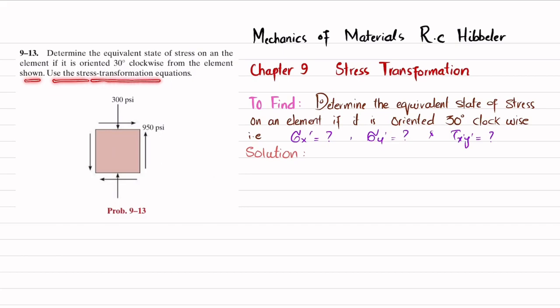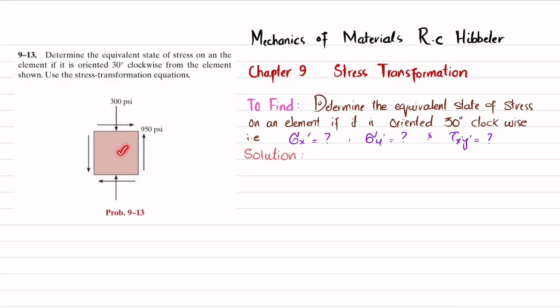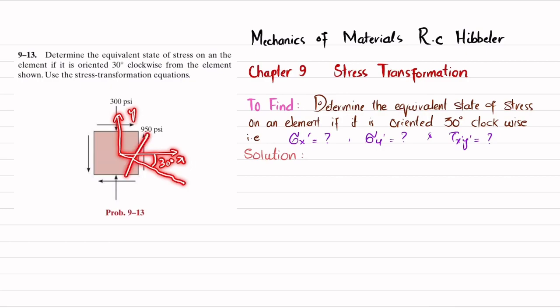Use the stress transformation equation. You can see this is the state of stress where there is a shear force of 950 psi and there is a compressive stress of 300 psi. This is its x-axis and y-axis. You have been asked that when it is rotated 30 degrees clockwise, you have to find the state of stress on that element.